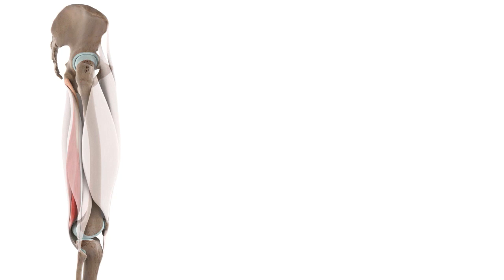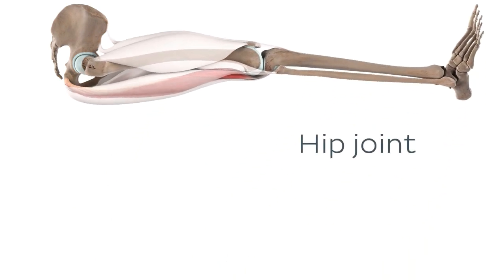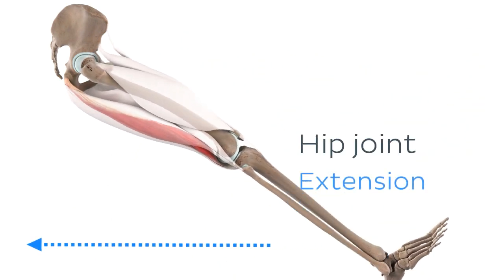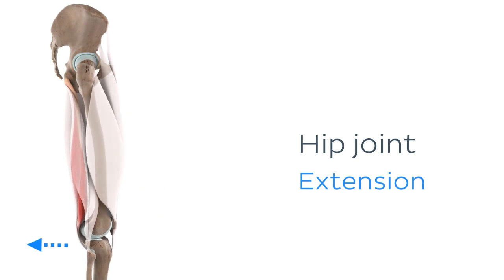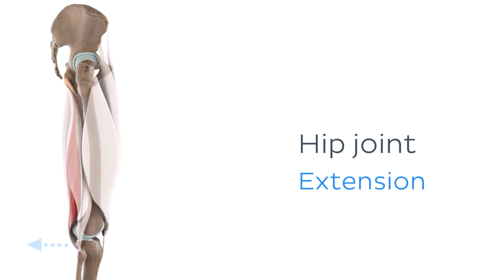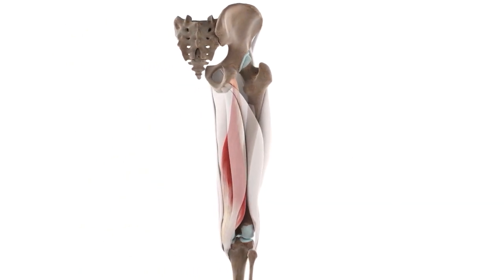Let's start by looking at the action of the semimembranosus at the hip joint. The contraction of the muscle acts to extend the thigh, which is this movement you can see here now. This action is carried out with the help of the other two hamstring muscles, namely the semitendinosus and the biceps femoris. So these three muscles are working together in conjunction to affect this movement.